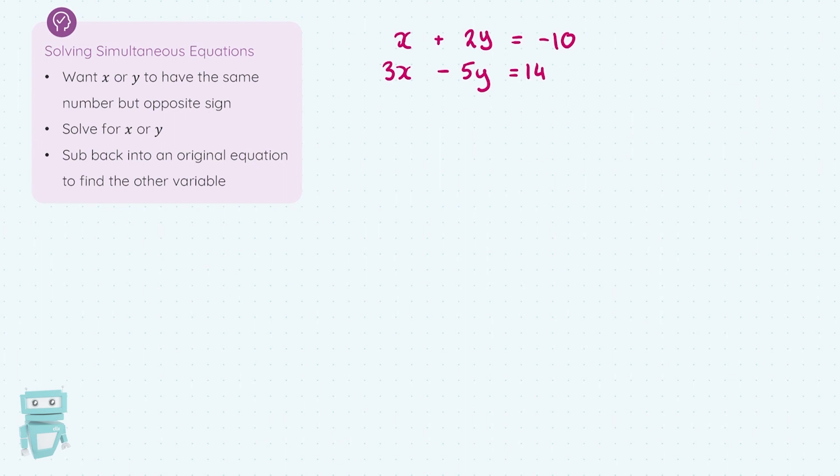So what number could I turn both of those into? Well, the lowest common multiple of the two is 10, so let's turn them both into 10s. To turn the first equation into a 10y, I'm going to have to multiply it by 5. And the second equation, I'll want a minus 10y of the opposite sign. So to turn minus 5 into 10, I'm going to have to multiply it by 2. So multiply the whole equation by 2. So let's just do that. Multiply the whole first equation by 5 and the second by 2.